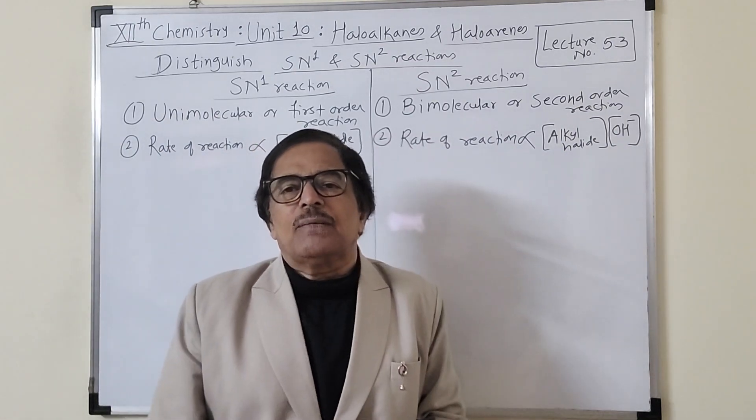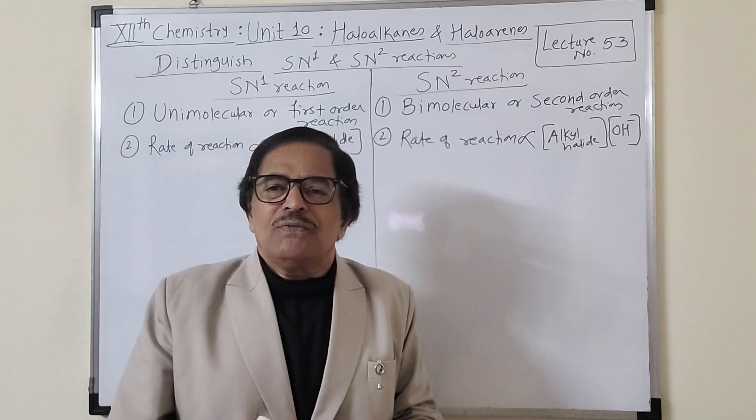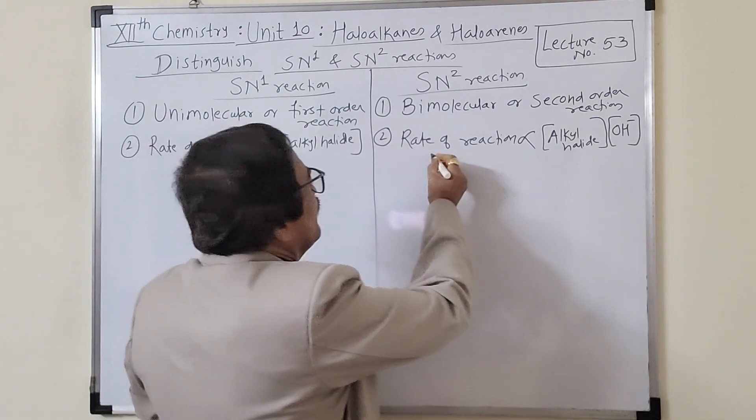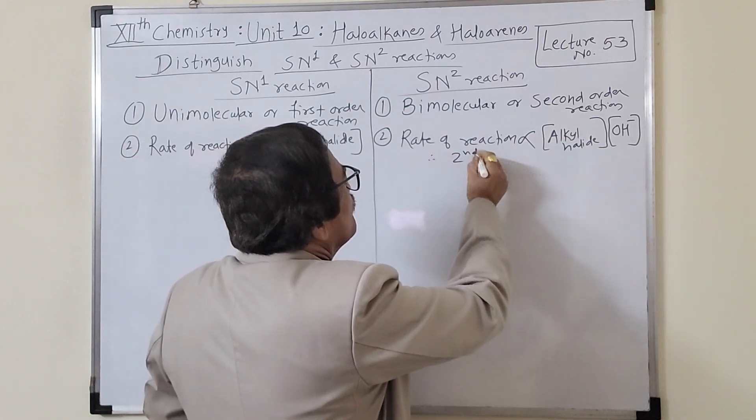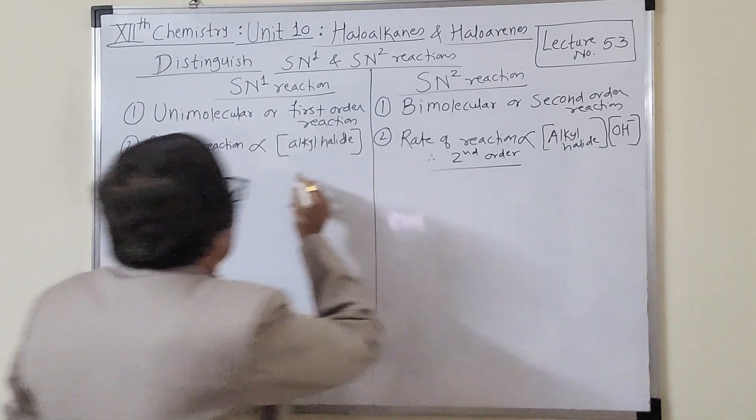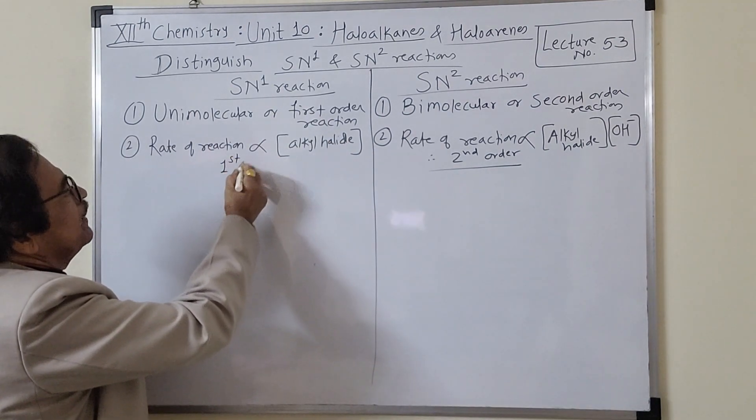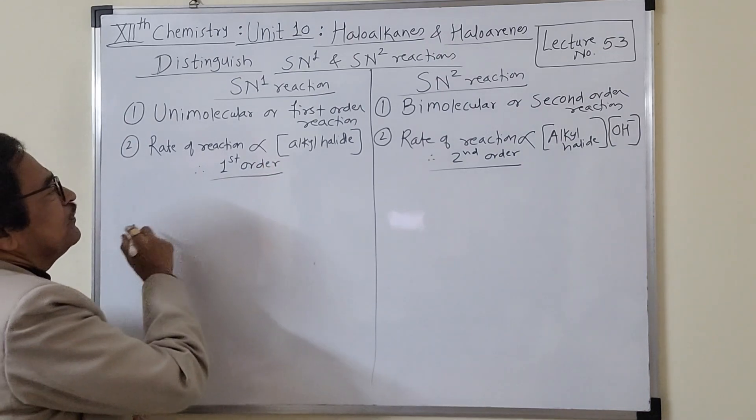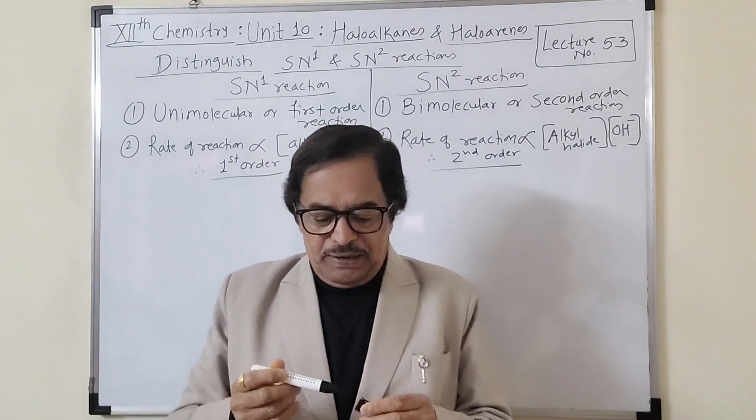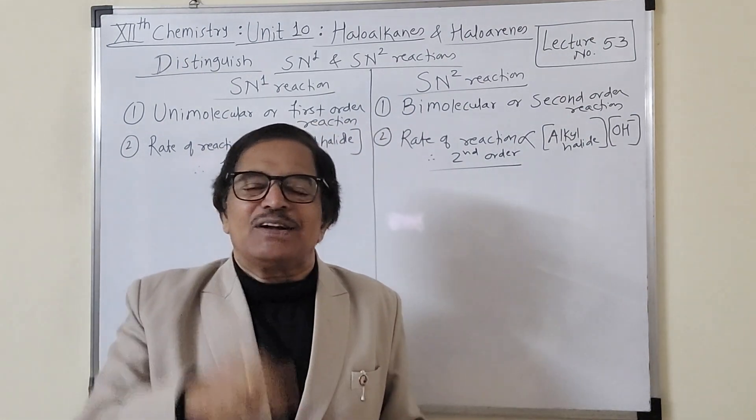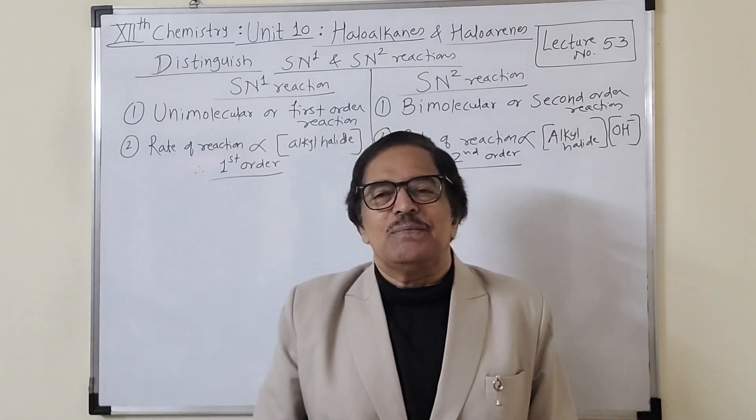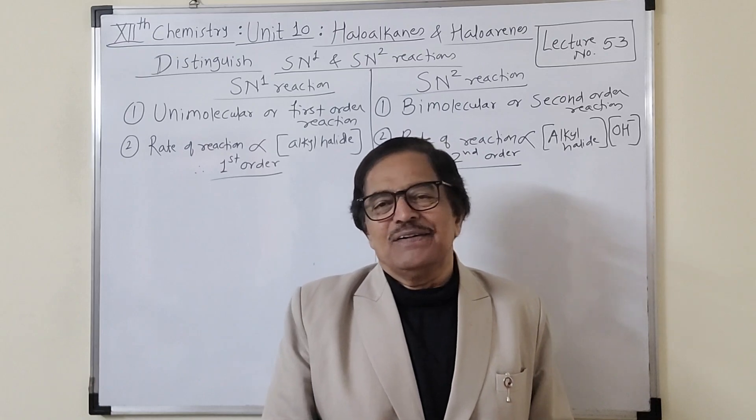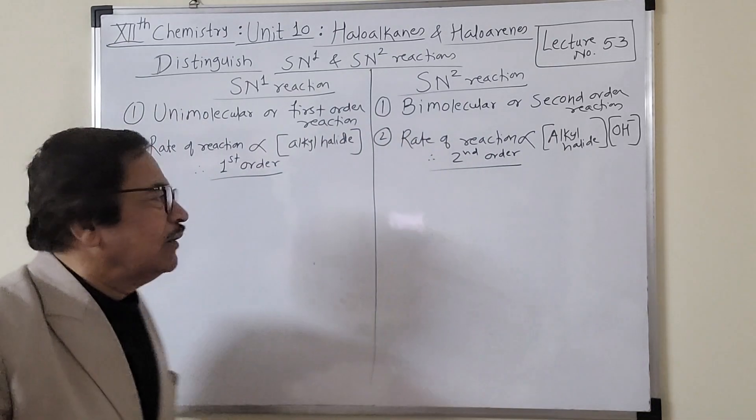Active mass means concentration in square brackets. Second order - it is called second order because the rate of reaction depends on two substances. Therefore it is first order here and second order there, decided by the number of reactants on which the rate of reaction is dependent.